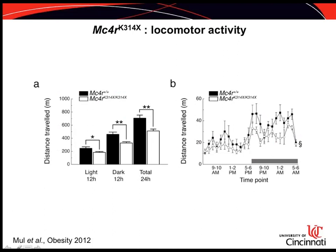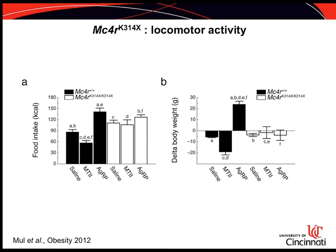Regarding locomotor activity, we used a home cage monitoring system with wild-type and homozygous rats. The homozygous mutant rats traveled less distance over 24 hours compared to wild-types, both during the light phase and the dark phase. These phenotypes — body weight, fat mass, feeding, and locomotor activity — all parallel what has been reported for the MC4R mouse model.